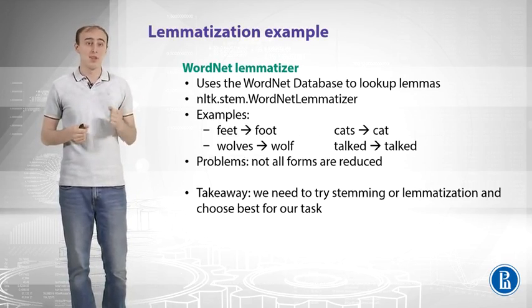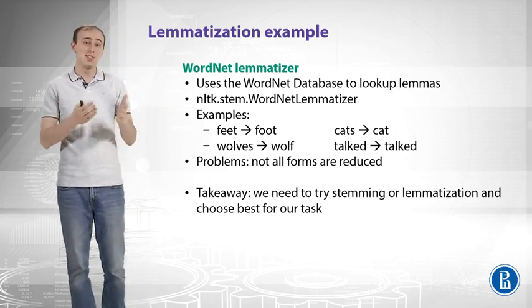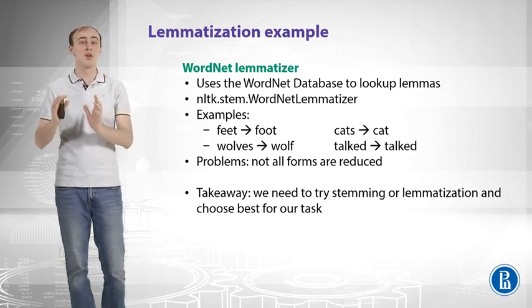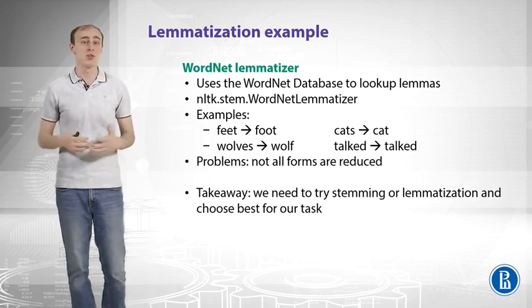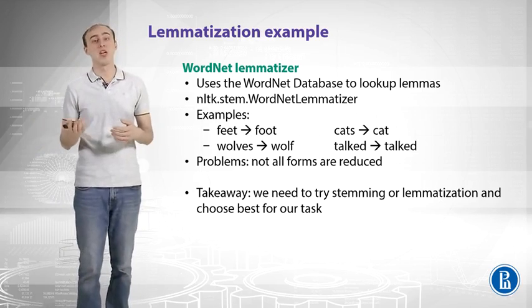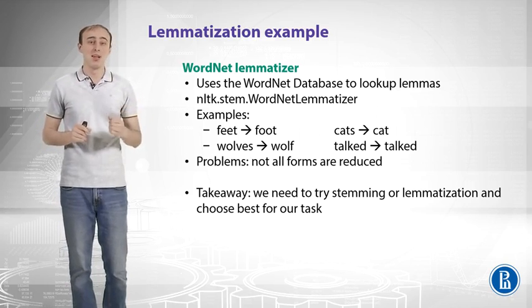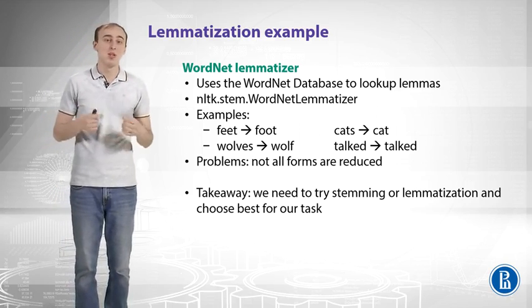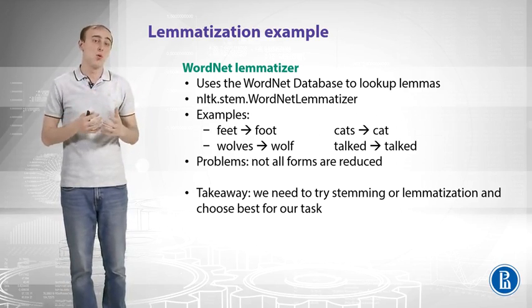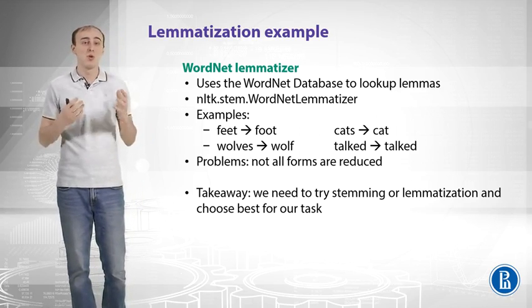Another example is lemmatization. You can use the WordNet lemmatizer, which uses the WordNet database to look up lemmas — also found in NLTK. This time 'feet' is successfully reduced to 'foot' because we have the irregular form in the database. 'Wolves' becomes 'wolf,' 'cats' becomes 'cat,' and 'talked' becomes 'talked' — no change. The problem is the lemmatizer doesn't reduce all forms, especially verbs, which may prevent merging tokens with the same meaning. The takeaway: try both stemming and lemmatization and choose what works best for your task.